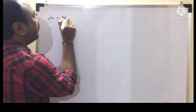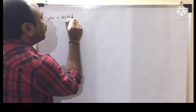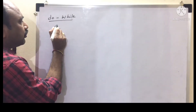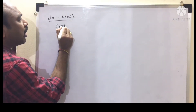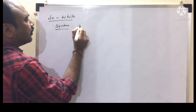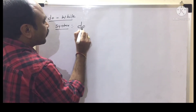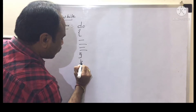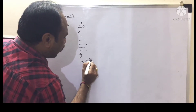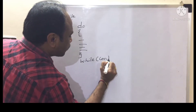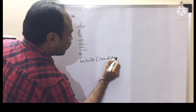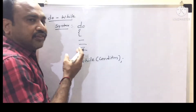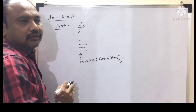We have to use the do keyword and while keyword to work with do-while. The syntax of do-while is: do, then a set of statements, then while of condition. This is the syntax of do-while. In which cases do we have to use do-while?